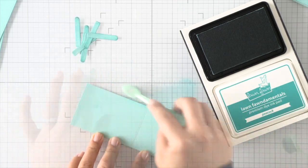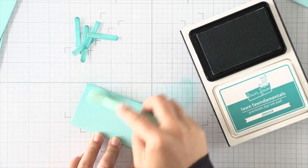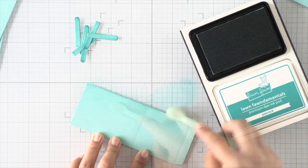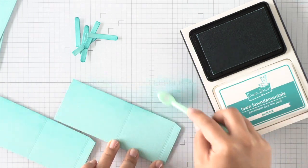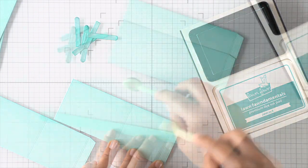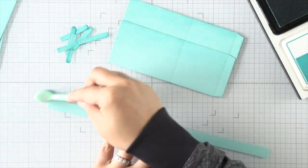I'm just adding a bit of shading here using some Peacock dye ink from Lawn Fawn, and I'm adding a very faint amount of ink at the top of the boxes just to give the box a little bit of dimension and shape.